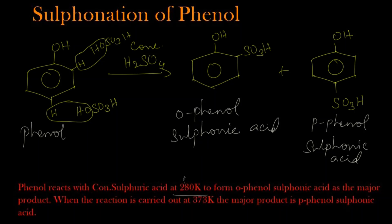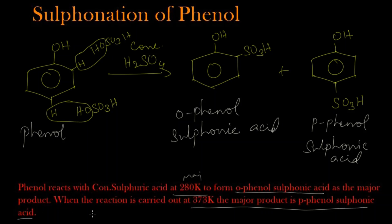At a temperature of 280 Kelvin, ortho phenol sulfonic acid is the major product. At a temperature of 373 Kelvin, the major product is para phenol sulfonic acid. So at two different temperatures the major product changes.